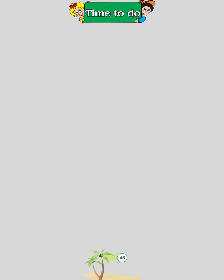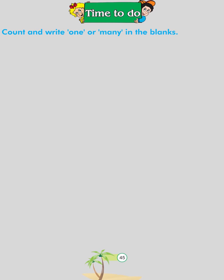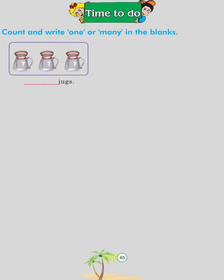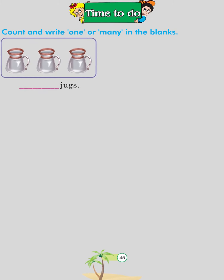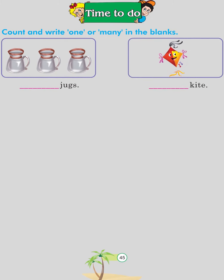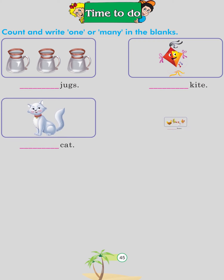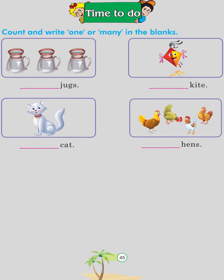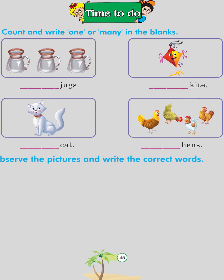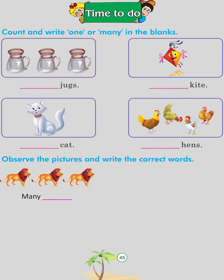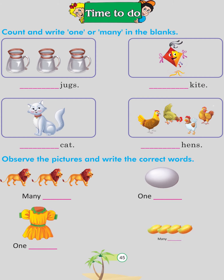Time to do. Count and write 'one' or 'many' in the blanks: many jugs, one kite, one cat, many hands. Observe the pictures and write the correct words: many lions, one egg, one frog, many mangoes.